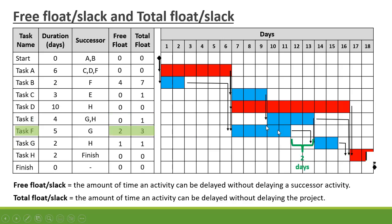Task F has a free float of 2 days. F is connected to G — as per the definition, free float is the amount of time an activity can be delayed without delaying a successor activity, so before F has an impact on G we have a delay of 2 days. G is connected to H with 1 day of float, so the total float is 1 plus 2 equals 3 days.